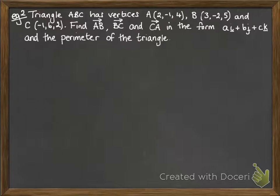Here's our next example. We've got a triangle ABC with vertices at the coordinates given. We want to find the vectors for AB, BC, and CA, and we're going to put them in the form of unit vectors. After we've done that, we're going to find the perimeter of the triangle.